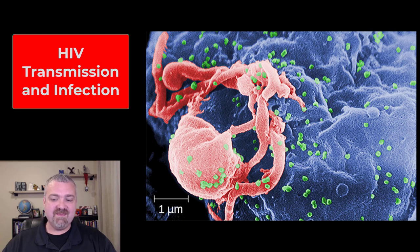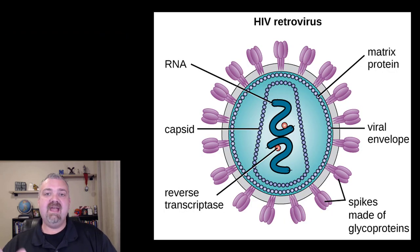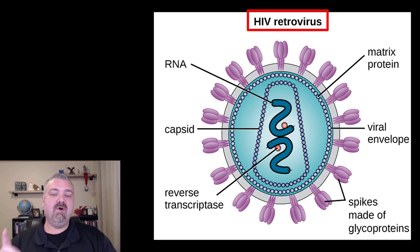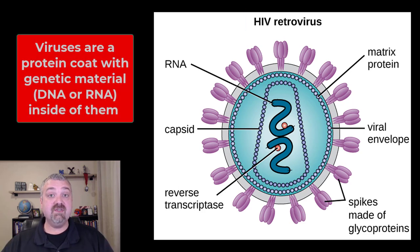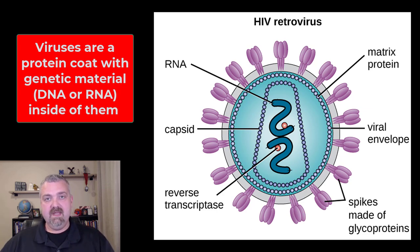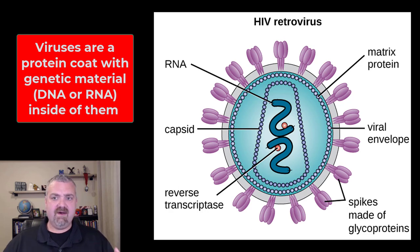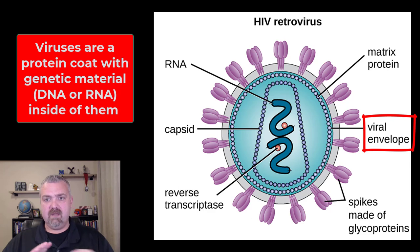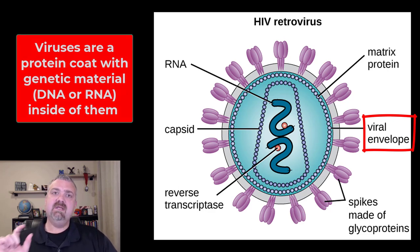These little green dots are the HIV virus. This is an example of HIV — it's called a retrovirus. Viruses are basically a protein coat with genetic material inside, either DNA or RNA. HIV is an example of an RNA virus, and like this one, it has a lipid envelope around it as well.